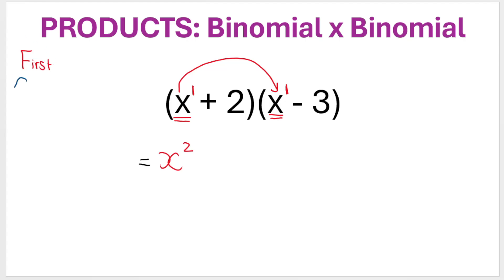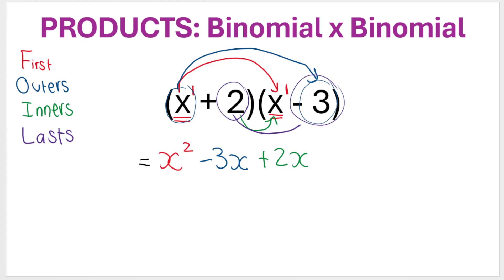Then we've got O for outers. Now, outers just means the one on the outside over here multiplied by the one on the outside over here. So x multiplied by negative three, negative three x. Then we've got I, which stands for inners. The inners are these two right here on the inside. So two times x is positive two x. And then the L stands for lasts. It's the last one over here multiplied by the last one over here. So two multiplied by negative three, negative six.